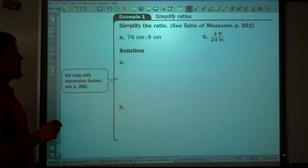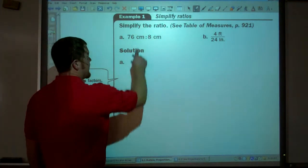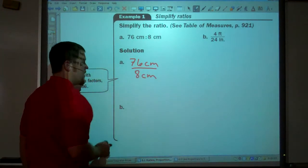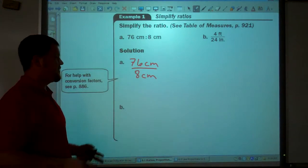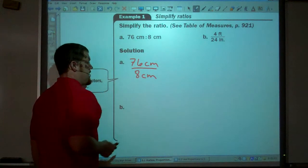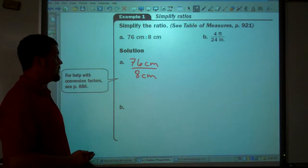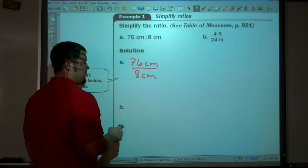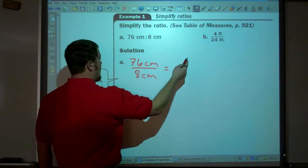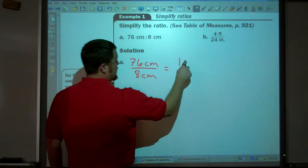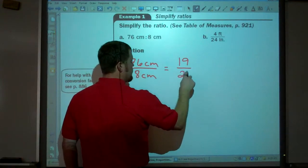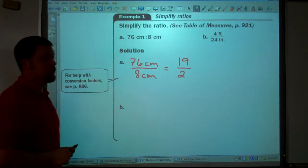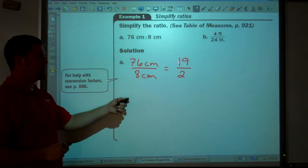Simplifying ratios. That will be the first type of problems we're going to do. So if we have the ratio of 76 centimeters to 8 centimeters, you simplify the numbers, and then you also simplify the units. So 76 and 8, what's the largest number that they have in common? The greatest common factor. In 76 and 8, the greatest common factor is 4. 76 divided by 4 is 19, and 8 divided by 4 is 2. Centimeters divided by centimeters cancels out. The ratio is 19 to 2. Your ratio always has two numbers. You're comparing two numbers.